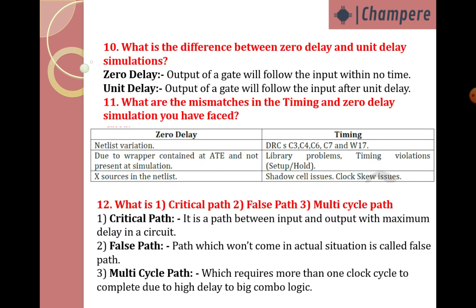What is the difference between zero delay and unit delay? In zero delay, the output of the gate follows the input with no delay — without any delay. In unit delay, the output of the gate follows the input after some unit time, like one second or two seconds — some delay. This is unit delay.